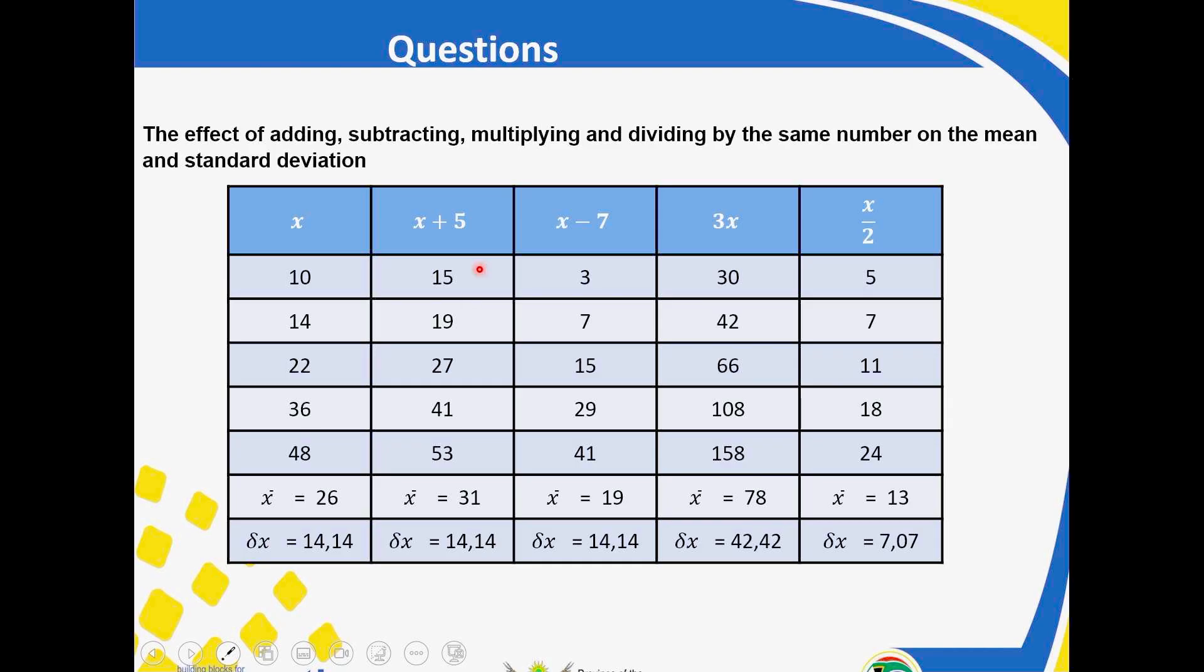You can see. 10 plus 5, 15. 14 plus 5, 19. You can see that. Then the third column, we are subtracting. We are subtracting. Then the third, the fourth one, we are multiplying by 3. Then here we are multiplying by 2.